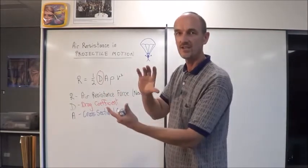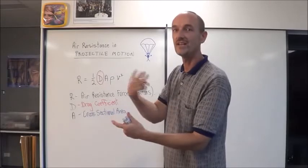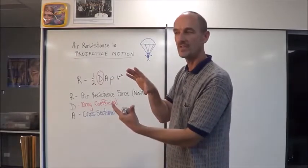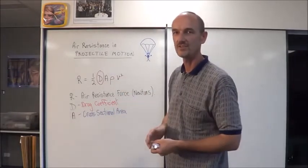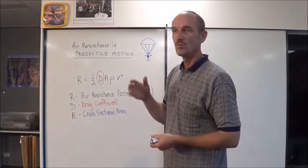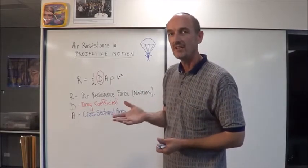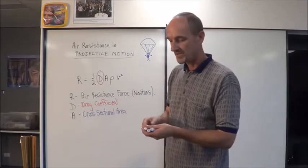So you would work out using πr² the area of the object that's meeting the air front-on. We measure the A value in units of meters squared.